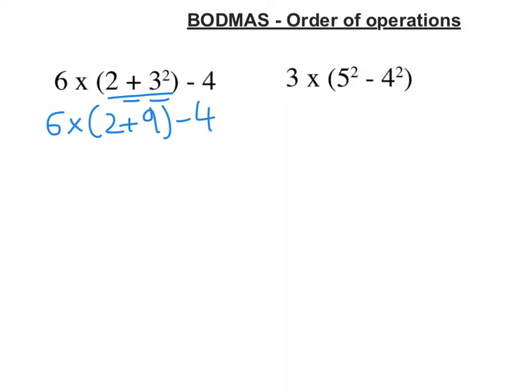Now deal with the addition inside the bracket. We get 6 times 11 minus 4. Multiplying comes before subtraction, so I've got to do that first. So 6 times 11 is 66. Take away the 4, 62.